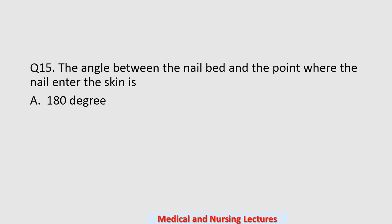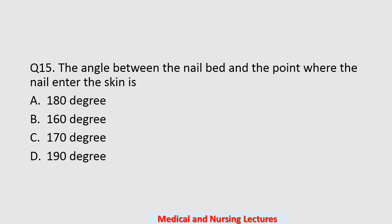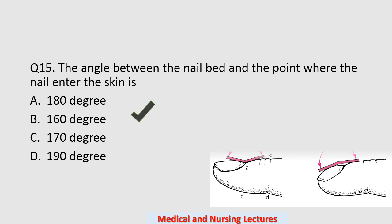Question number fifteen: the angle between the nail bed and the point where the nail enters the skin is — options are 180 degrees, 160 degrees, 170 degrees, or 190 degrees. The correct option is 160 degrees. More than 180 degrees can be found in the clubbed finger.